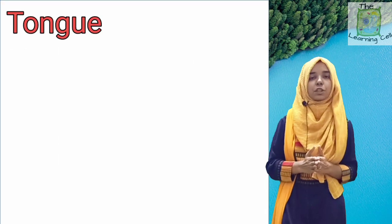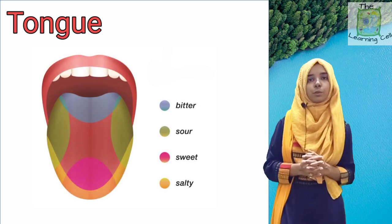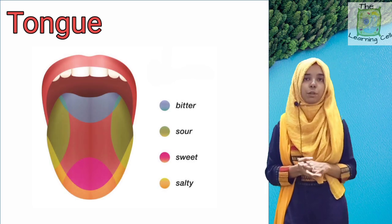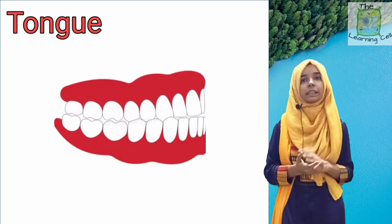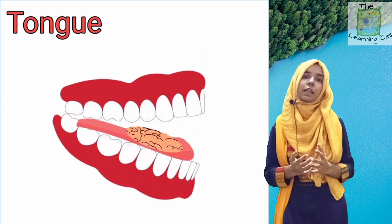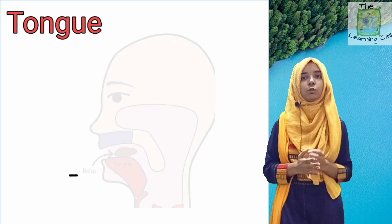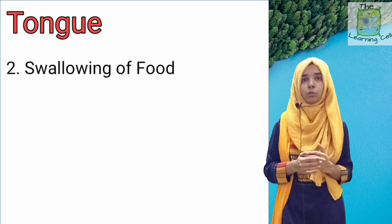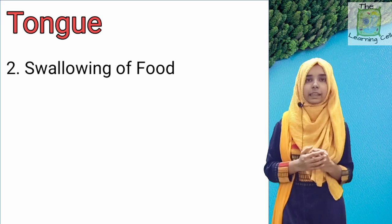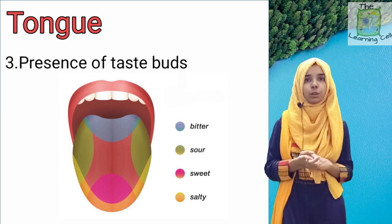Another important structure present in the mouth is the tongue. The tongue is a muscular organ which is attached to the floor of the mouth. Its first function is that it helps in mixing the food with the saliva; with the saliva, the food makes a compact structure known as the food bolus. The second function is that it helps in swallowing the food. And third, there are taste buds present on the surface of the tongue which help us in tasting the food.